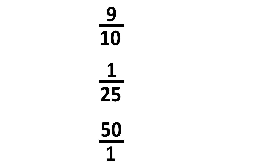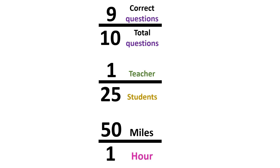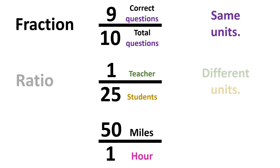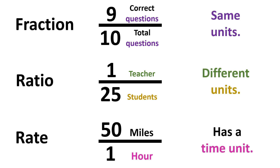These three expressions may look like the same type of expression because all of them have a horizontal line called a division bar. But when we show the units for each number, we see they are different types of expressions. The first one is a fraction, the second one is a ratio, and the third one is a rate. Since all of these can be written with a division bar, we can use the cross-multiply and divide method to solve many problems related to fractions, ratios, and rates.